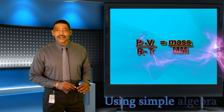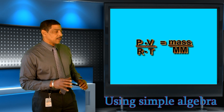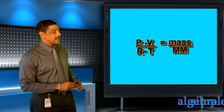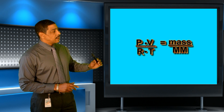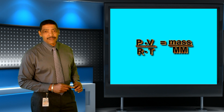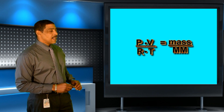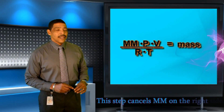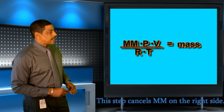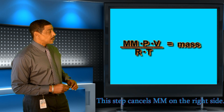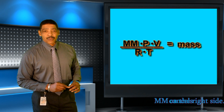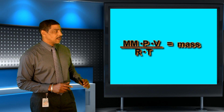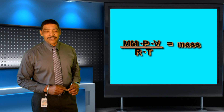Dividing through by RT will yield the following relationship, where P times V divided by R times T will equal the mass of the gas divided by its molar mass. And to solve for the mass of a gas, we multiply. Multiplying through by molar mass will yield the following, where molar mass times pressure times volume divided by R times T will equal the mass of the gas.